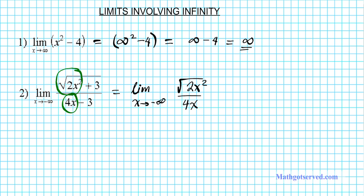This limit can be reduced to the limit as x approaches negative infinity of the square root of 2x squared divided by 4x. Now what we'll do is simplify this resultant limit. This becomes the limit as x approaches negative infinity of the square root of 2, and if you root x squared, you just have x divided by 4x.